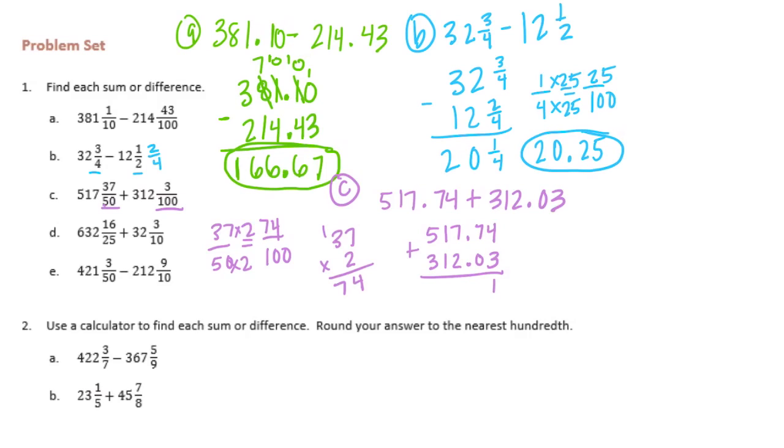So let's add those. 4 plus 3 is 7, 7 plus 0 is 7. I'll bring the decimal point down. 7 plus 2 is 9, 1 plus 1 is 2, and 5 plus 3 is 8. So we get 829 and 77 hundredths.